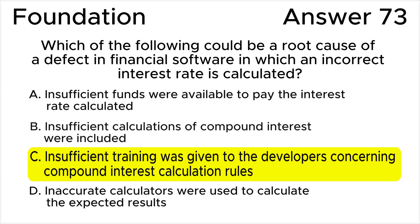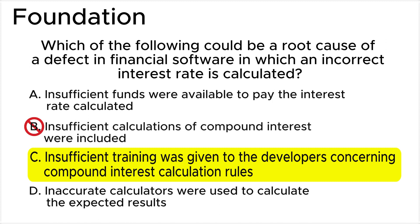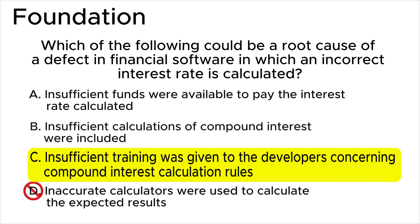Answer B is invalid because we don't have any information about compound interest from the wording of this question. This option seems logical and possible, but we don't know anything about whether the financial software calculates compound interest or not. Answer D is invalid because this option points to an external tool or device used for validation. The software should not rely on external tools; its calculations should be accurate based on its internal algorithm. If the software produces incorrect results, regardless of external tools, the issue lies within the software itself.